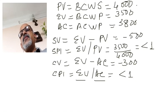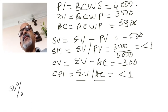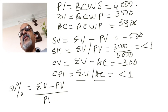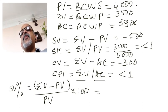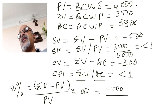There is also Schedule Variance Percentage = (Earned Value − Plan Value) / Plan Value × 100. In this case, that is (−$500 / $4,000) × 100.